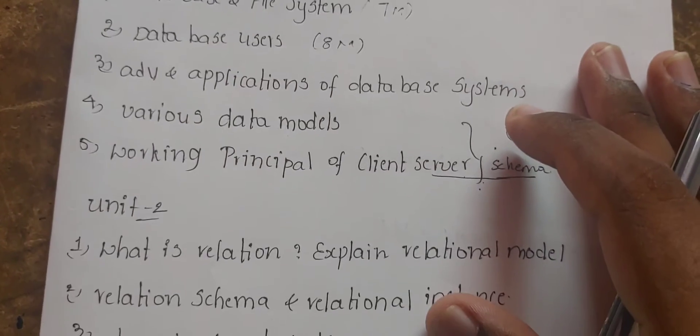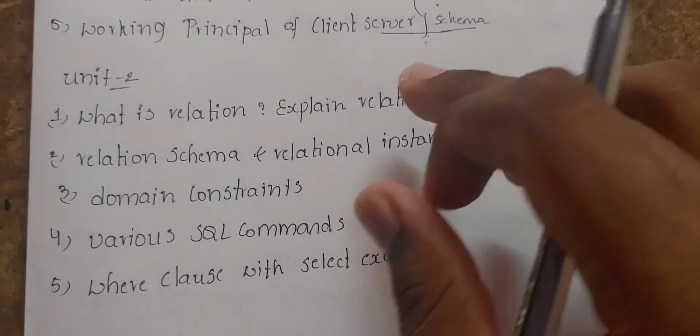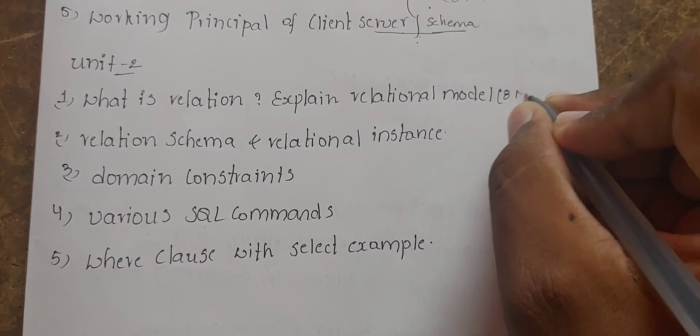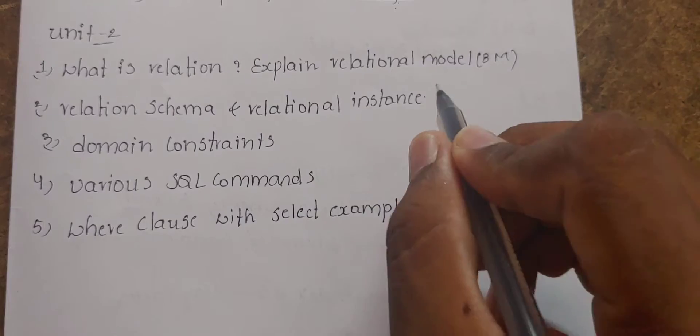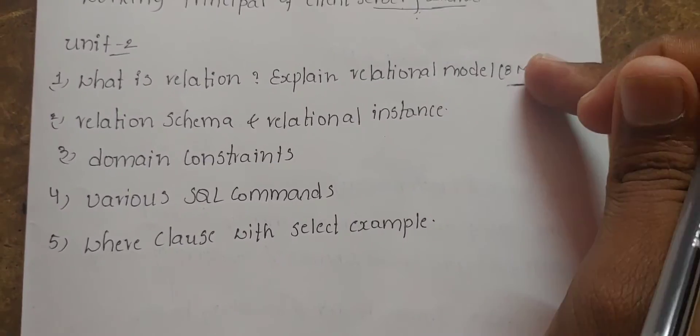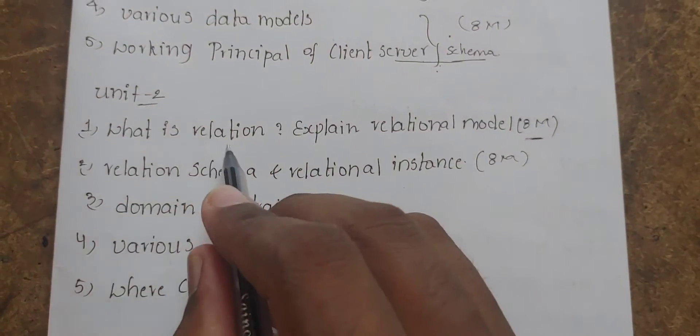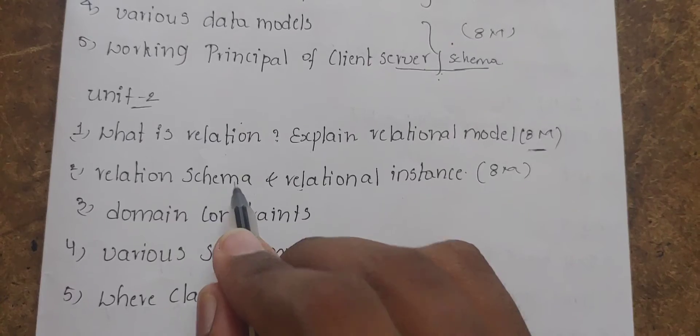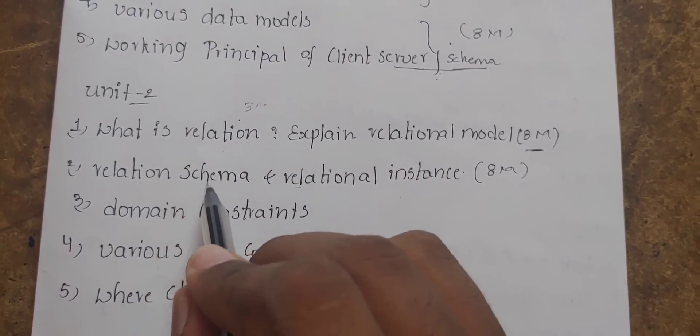What is the relation and explain the relational model. We're going to explain the model. Here we see the list in the next one. The specific one's audience.